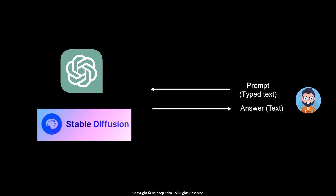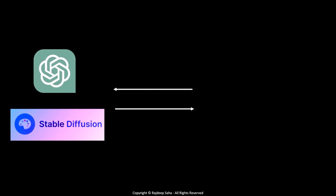So how is this used in an application? In an application, you need to send the prompt using code, such as Python, JavaScript, Java, etc. And you need to get the answer in a structured format such as JSON, because an application cannot parse a free-form answer easily. When the answer comes back in a structured format, the code knows how to parse it and feed it to the next part of the process.